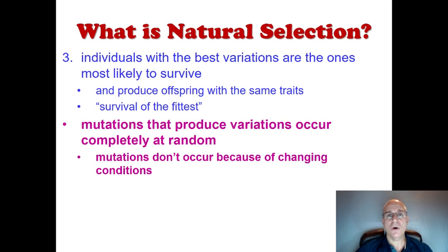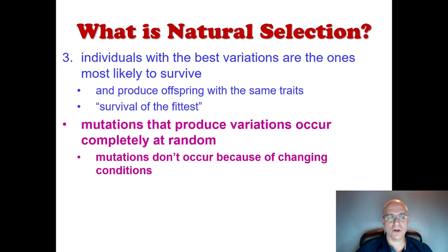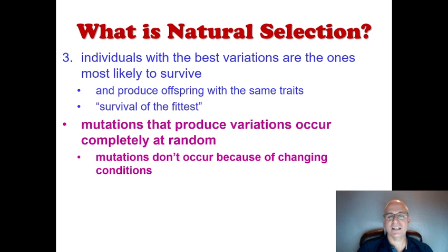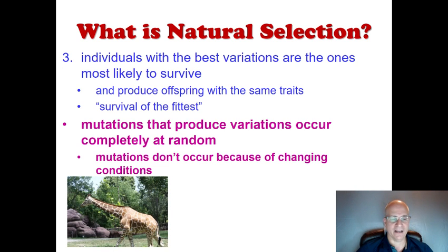That's why step three of natural selection is sometimes called survival of the fittest — those individuals that fit best in the environment, that have the adaptations giving them the biggest advantage, are the ones most likely to survive long enough to reproduce. Please note that the mutations producing these variations occur completely at random. Mutations — changes to the DNA — don't occur because of changing conditions. The mutations occur naturally, but if that mutation gives a particular advantage, then individuals with that adaptation are the ones that most likely survive. One of the classic examples we use to talk about this is the giraffe.